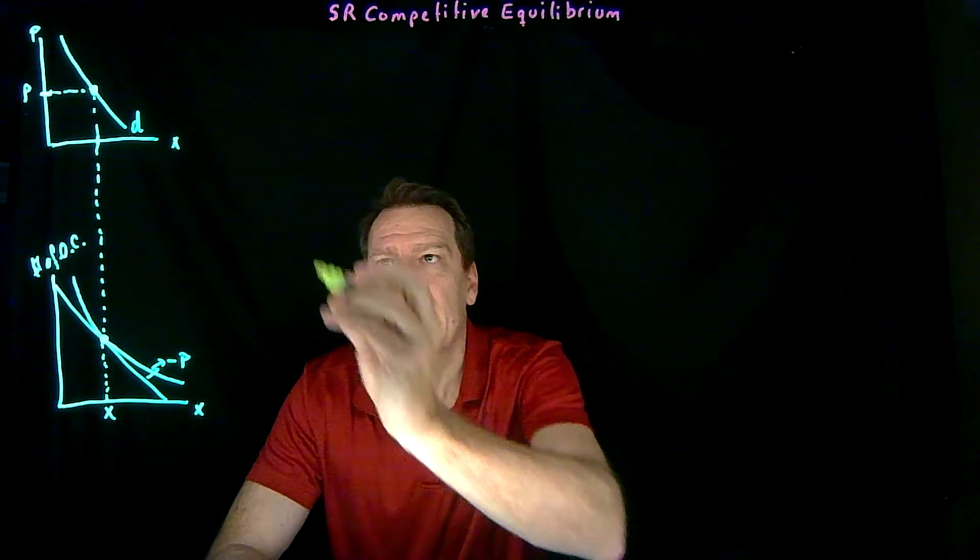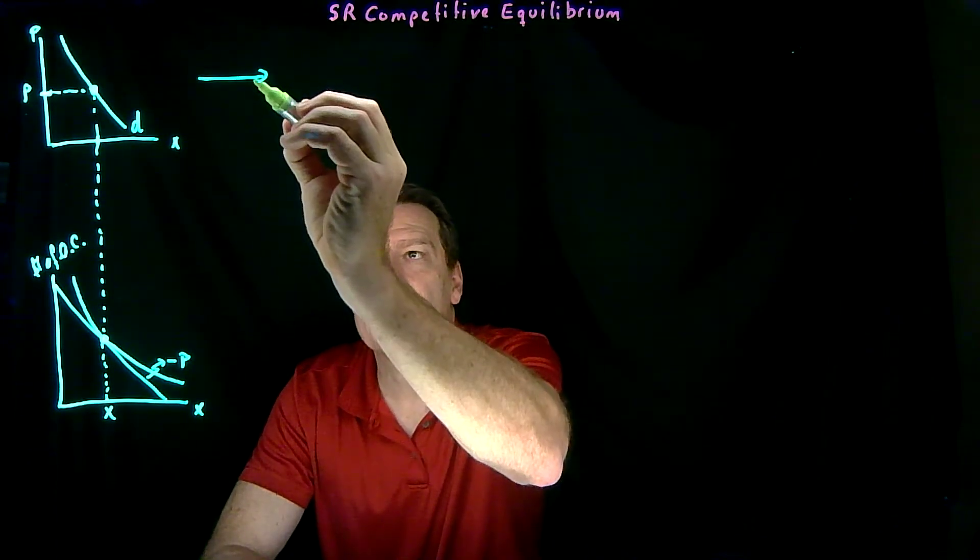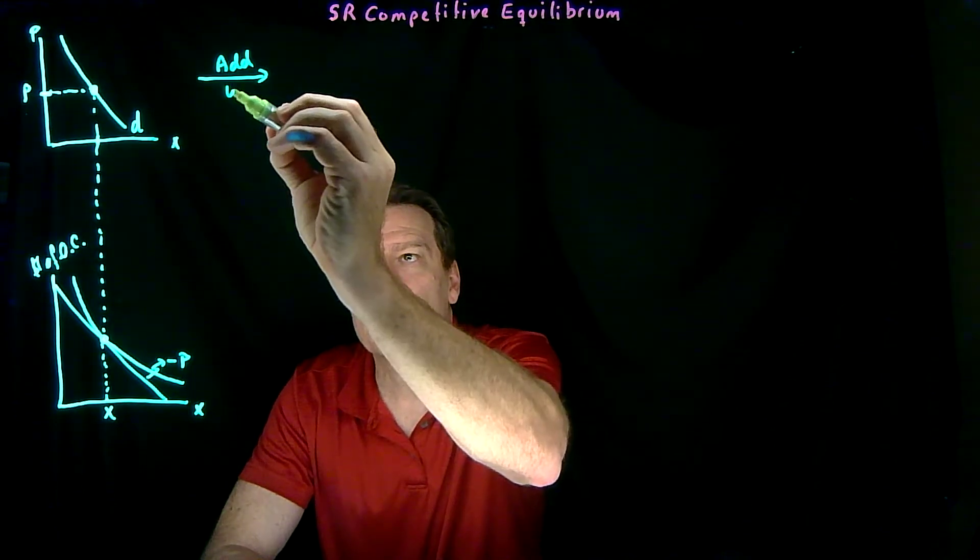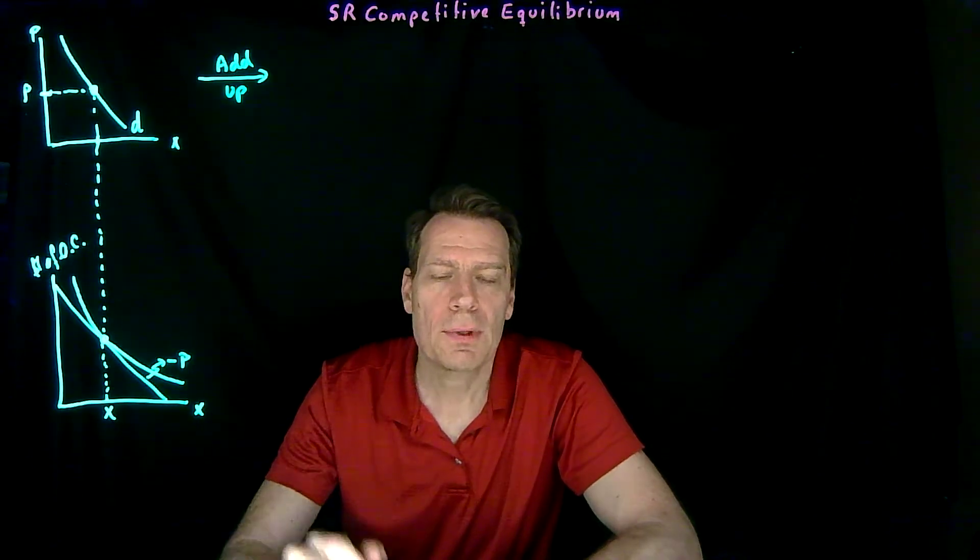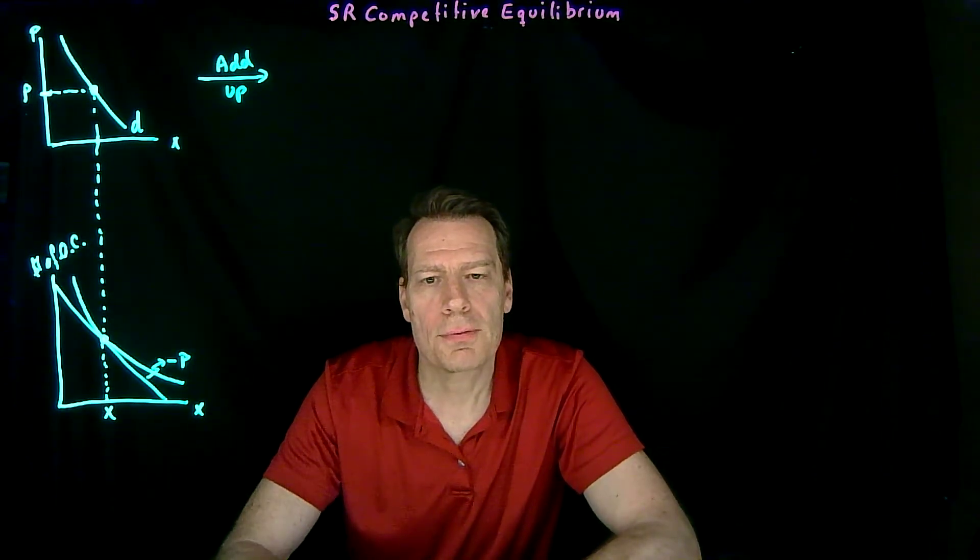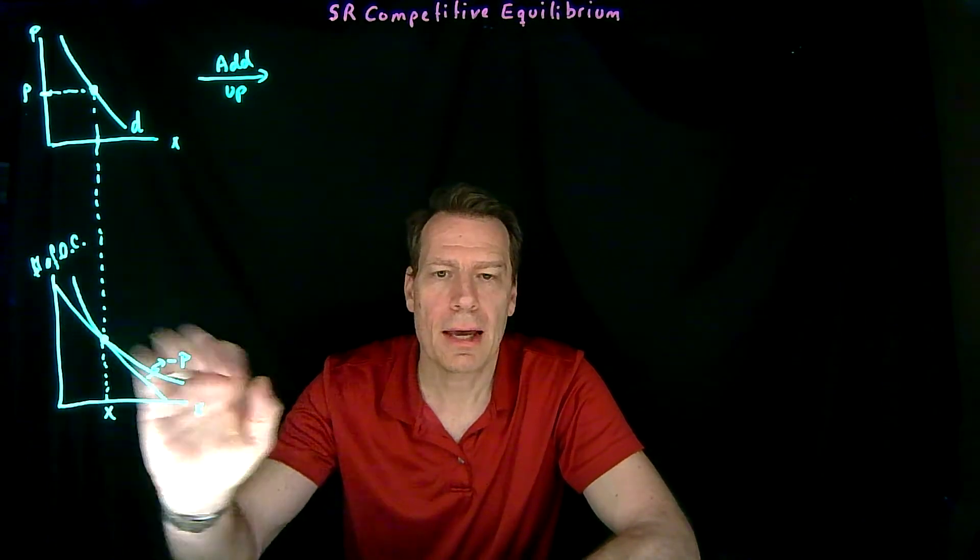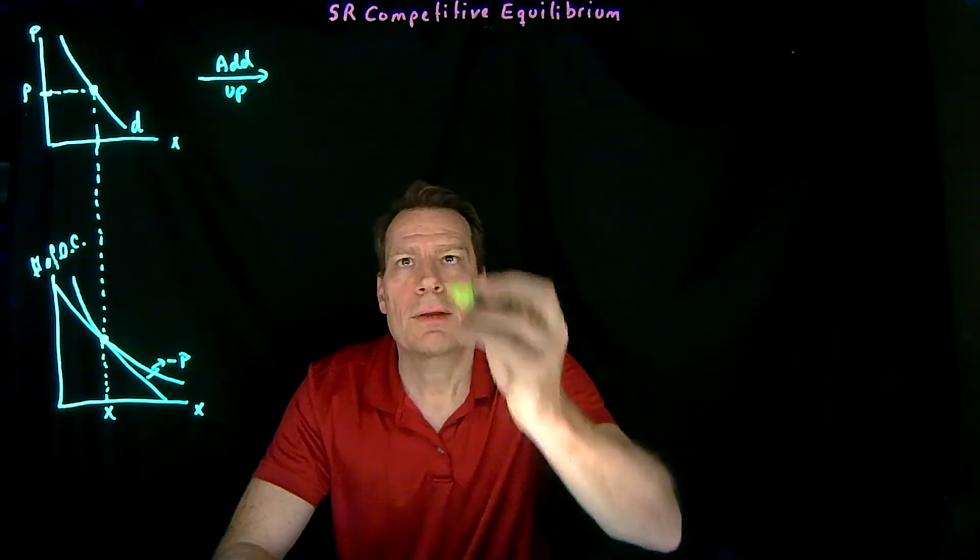We can now add up all of these individual demand curves for consumers. So we take all the consumers that are interested in purchasing the good x, and we add up those individual demand curves that come from their underlying preferences.